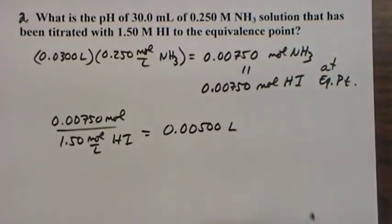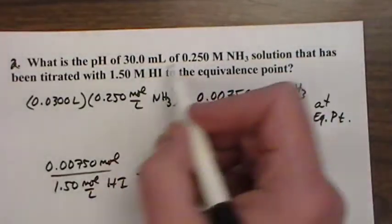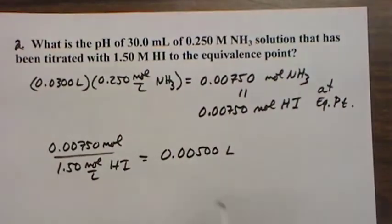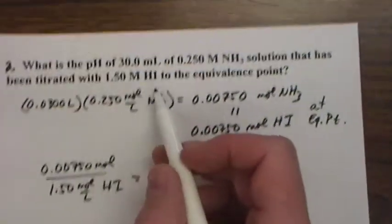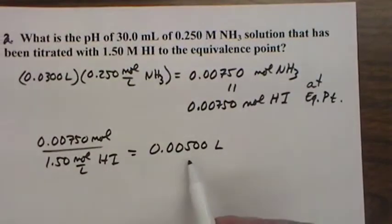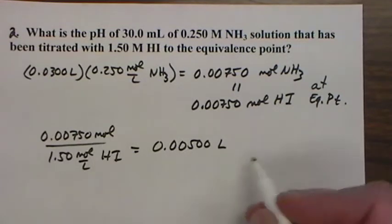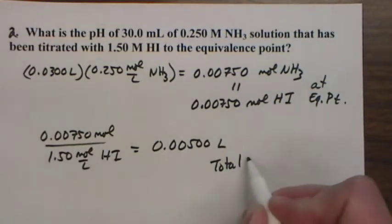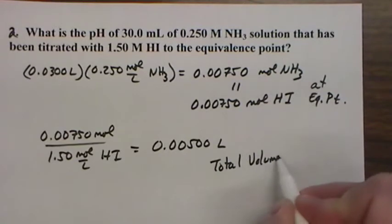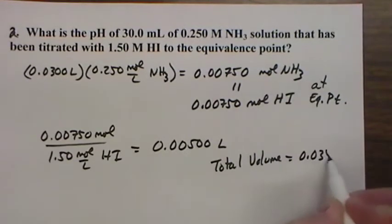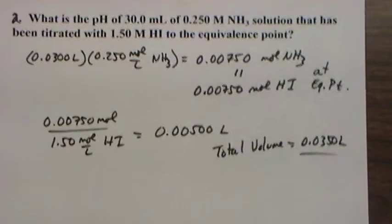So when you have that huge of a difference in concentration, we should expect there to be, since there's 30 mils here, we should expect this to be pretty small. It's only five mils. Okay, but the total volume that we'll need later is 0.035 liters. So we'll have that.